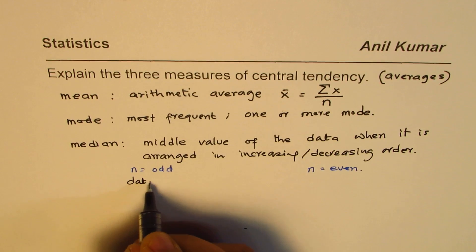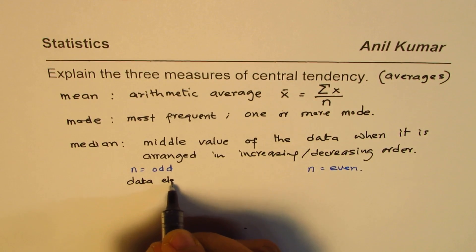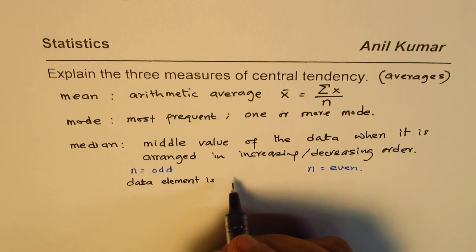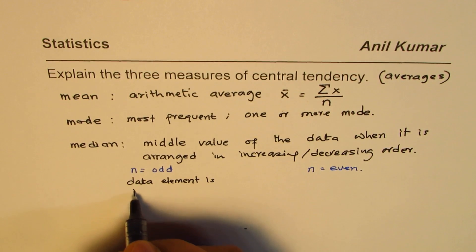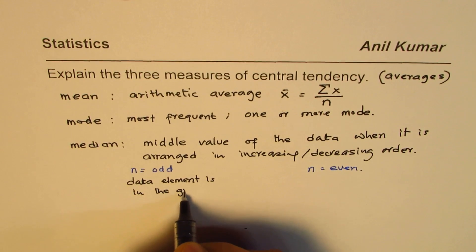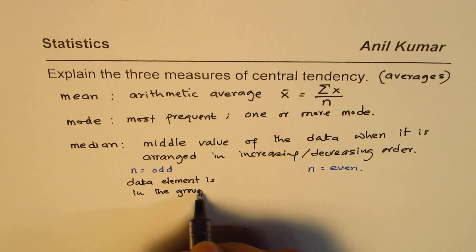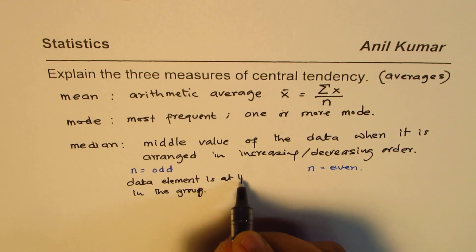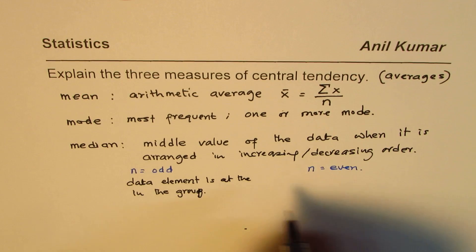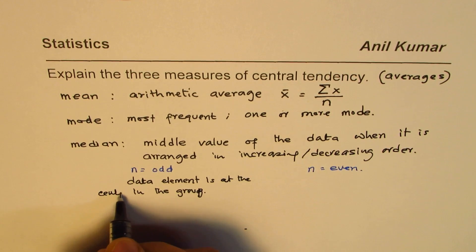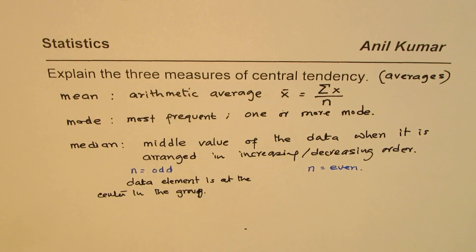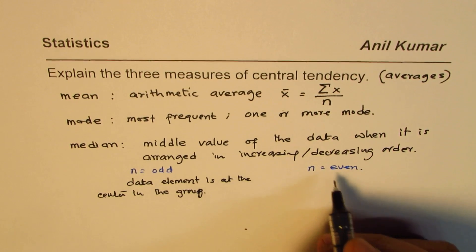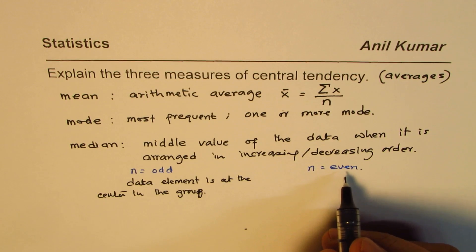The data element is at the center of the group, so it is a particular element right in the center. But in case n is even,